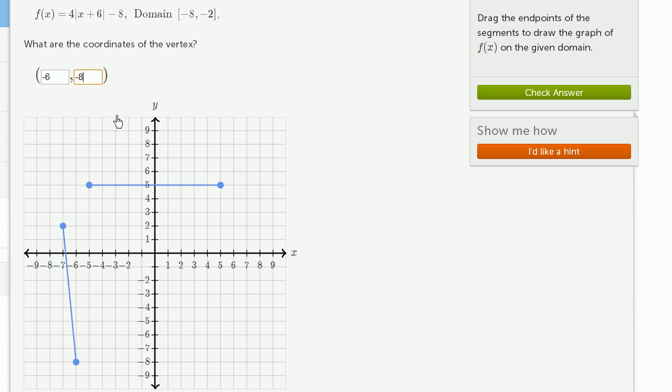So when x is negative 8, what is f(x)? Negative 8 plus 6 is negative 2. Take the absolute value of that. That is going to be 2 times 4 is 8 minus 8 is 0. So you have the point negative 8 comma 0.